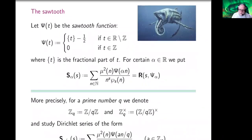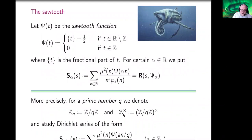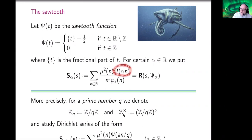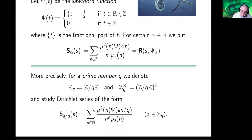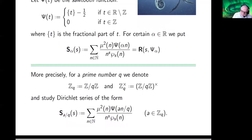I also looked at some other functions. Here I'll use the sawtooth function, which I define as psi(t) equal to the fractional part of t minus one half, if t is a real number which is not an integer, and I take it to have the value zero for integers. We can consider this as one of these functions g(n), moving away from multiplicative characters. We get this new function — I'll just call it the sawtooth — which shows up when dealing with these Farey fractions. We take the real number alpha to be a fraction A over Q, where Q is a prime number.